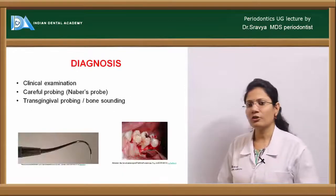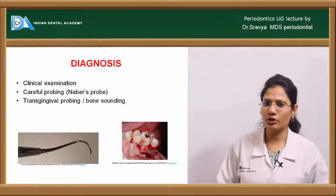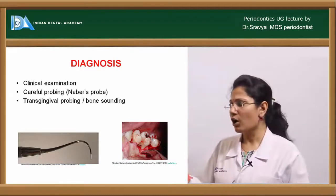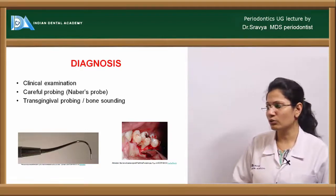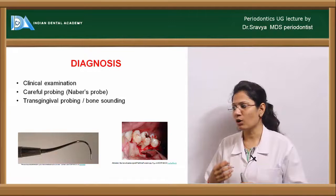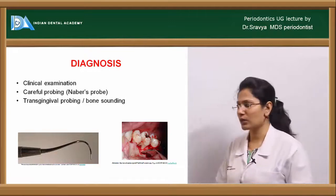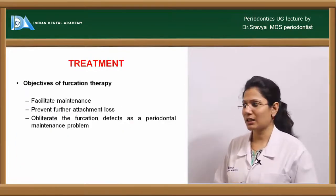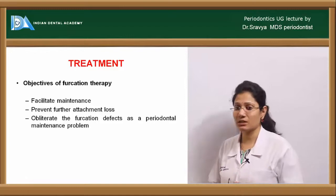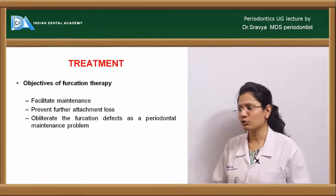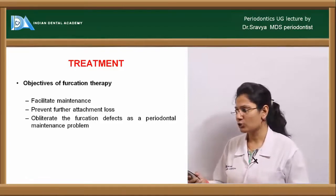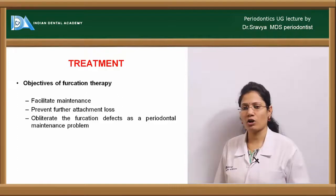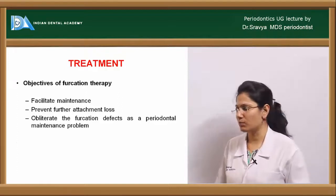Clinical diagnosis of furcation involvement uses a furcation probe or transgingival probing or bone sounding. The objectives of furcation therapy are to facilitate maintenance, prevent further attachment loss, and obliterate the furcation defects as a periodontal maintenance problem.